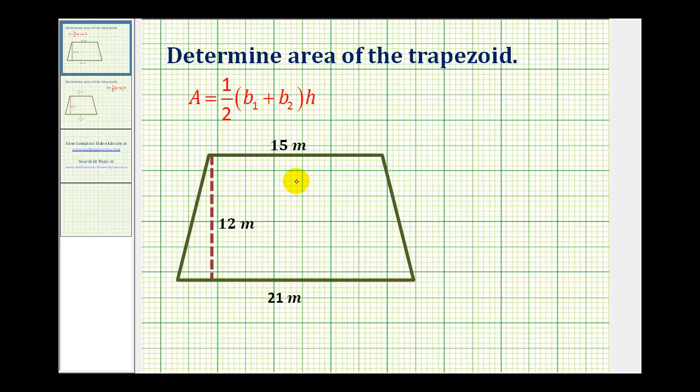We want to find the area of the given trapezoid. A trapezoid is a quadrilateral with one pair of parallel sides. The area of a trapezoid is given by the formula A equals one-half times the quantity b₁ plus b₂ times h, where b₁ and b₂ are the two parallel sides of the trapezoid and h is the height.